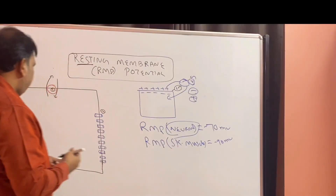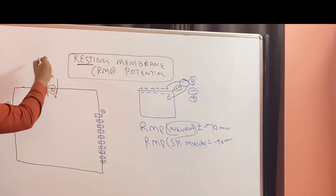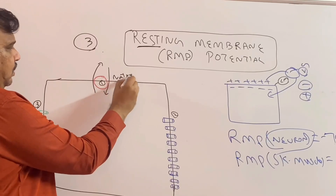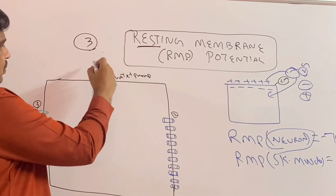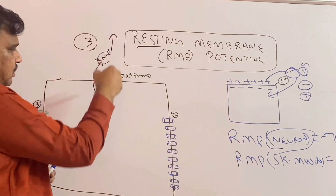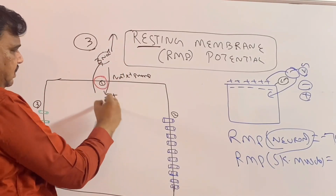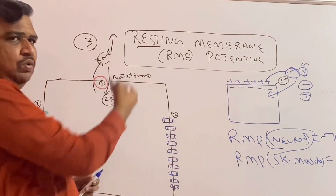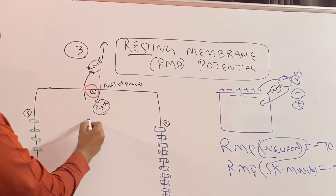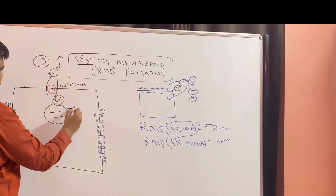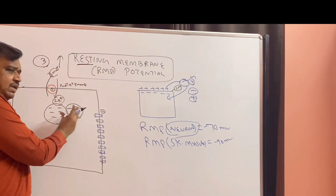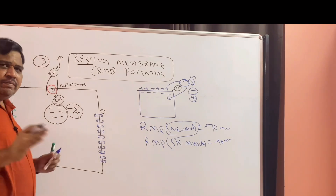Let us go into the diagram. There are three steps to arriving at resting membrane potential. Step one is the sodium-potassium pump. Because of the sodium-potassium pump, three sodium ions go outside and two potassium ions come inside. So three plus is going outside and two plus is coming inside. Because of this, there is going to be some negativity inside — this is around minus 5 to minus 10 millivolt. Because of the sodium-potassium pump, a negativity of about minus 10 millivolt is created inside the cell.